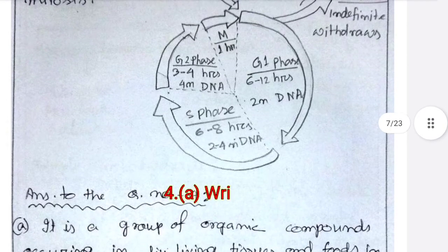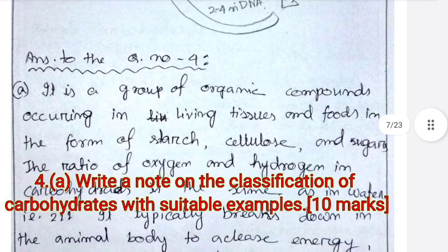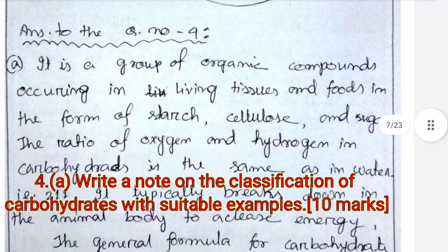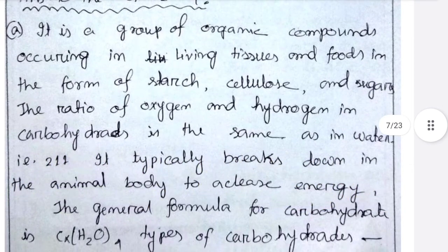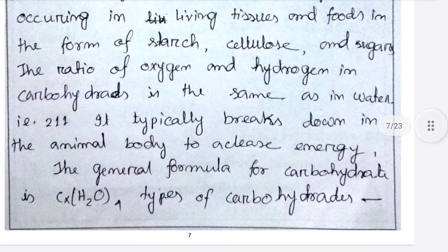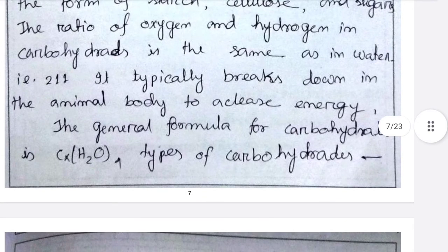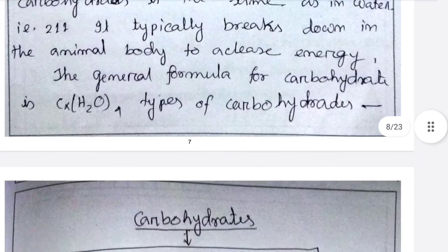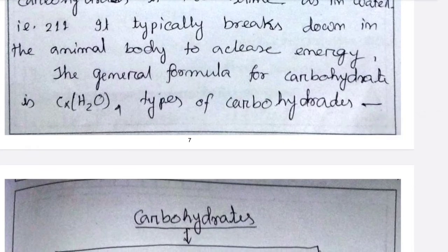Next: write a note on the classification of carbohydrates with suitable examples. Carbohydrates are a group of organic compounds occurring in living tissues and foods in the form of starch, cellulose, and sugar. The ratio of oxygen and hydrogen in carbohydrates is 2:1:1. They typically break down in the animal body to release energy. The general formula of carbohydrates is Cx(H2O)n.